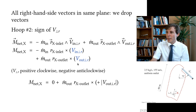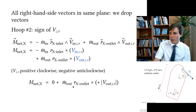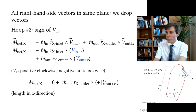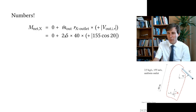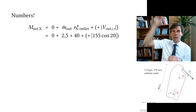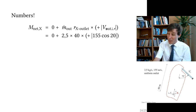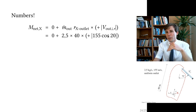For the outlet term, we use the mass flow, the radius to the outlet, and the perpendicular component of the outlet velocity. Plugging in numbers: mass flow = 2.5 kg/s, distance to the thruster = 40 m, and outlet velocity = 155 m/s. We take cos(20°) to extract the component perpendicular to r.